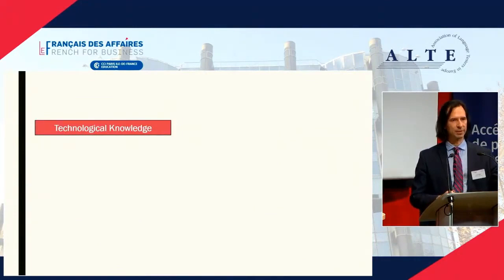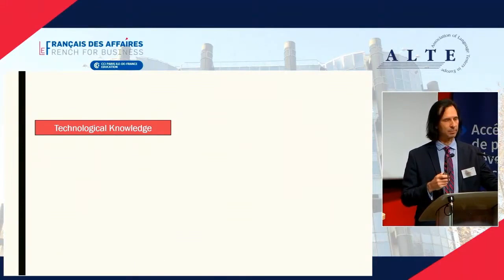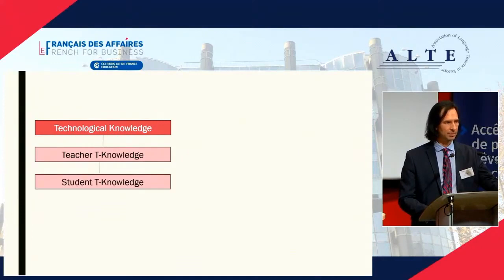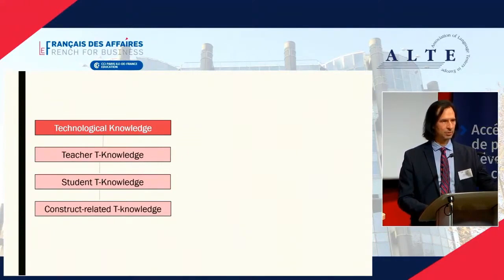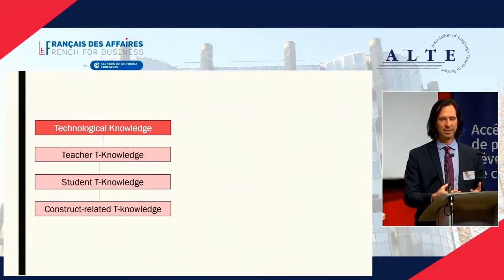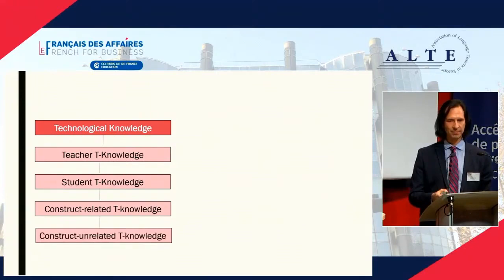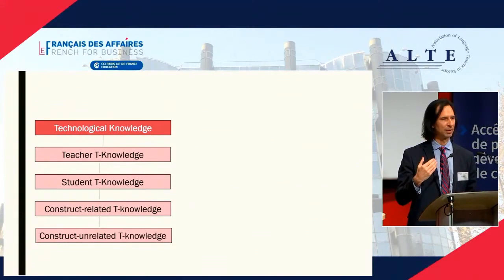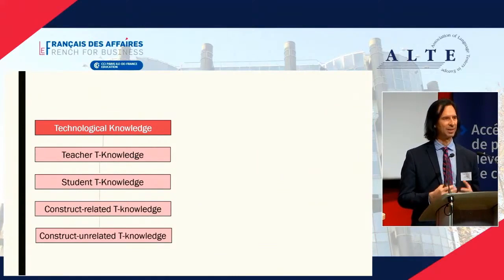Thinking about what technological knowledge comprises, we can break it down into several aspects: knowing what is available technologically; the technological knowledge of the teacher; the technological knowledge of the student; and technological knowledge related to the construct — for example, being able to type on a computer to write an essay. However, there is also knowledge unrelated to the construct, such as when using AI-based proctoring and the student needs to go into their browser and allow permissions for their web camera — additional technological knowledge we must consider when selecting technology.